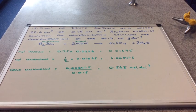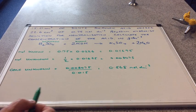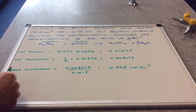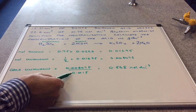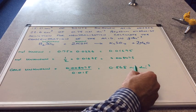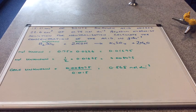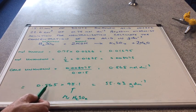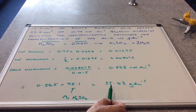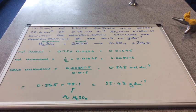We now turn moles into concentration. We know the volume of the acid is 15 cm³ (0.015 dm³), so we divide moles by volume to get 0.565 mol/dm³. To convert to grams per decimetre cubed, we multiply by the MR of sulphuric acid. The concentration of this acid is therefore 55.43 grams per decimetre cubed.